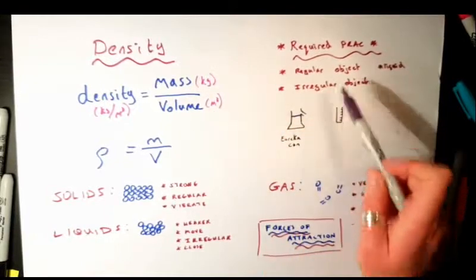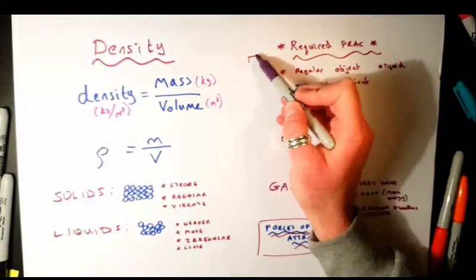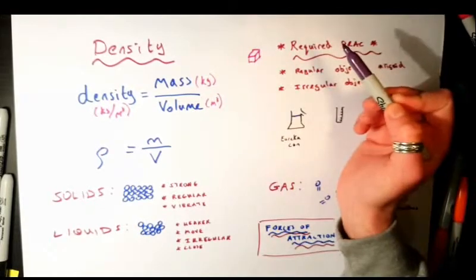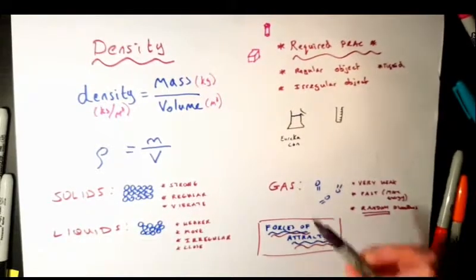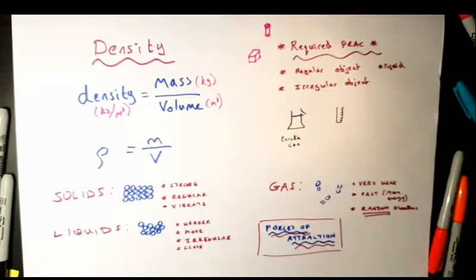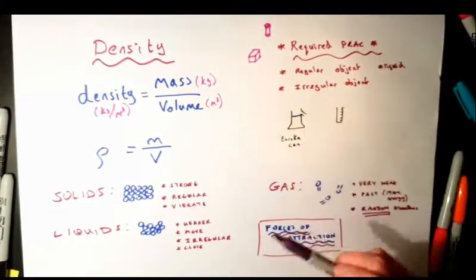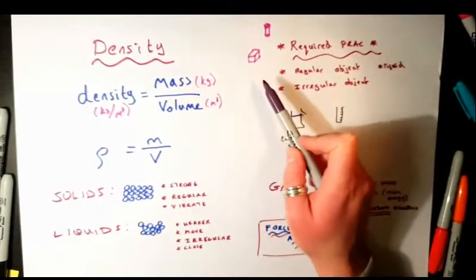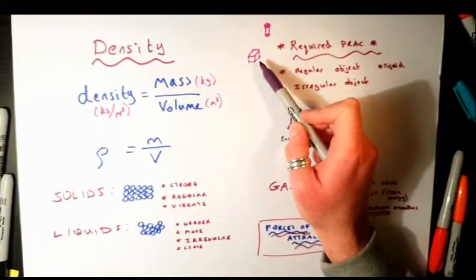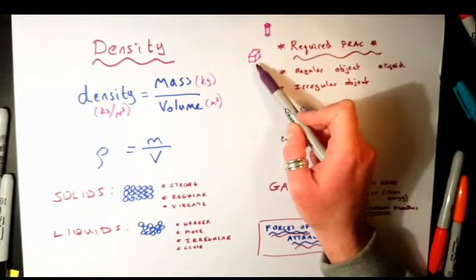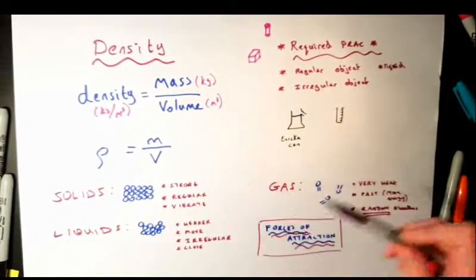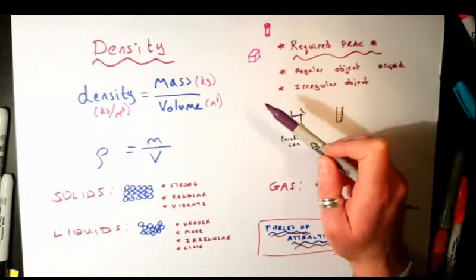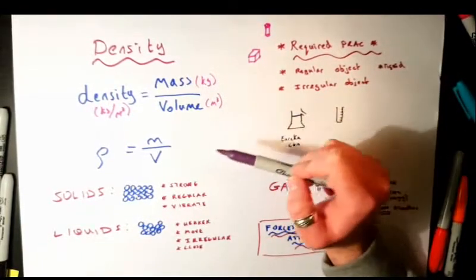For a regular object — something like a cube, a cylinder, or a sphere — you need mass and volume. You find the mass by weighing the object using a mass balance. For a cube, volume is base times width times height. Then you find the density by doing mass divided by volume. State the equation clearly — don't just say 'find density.'